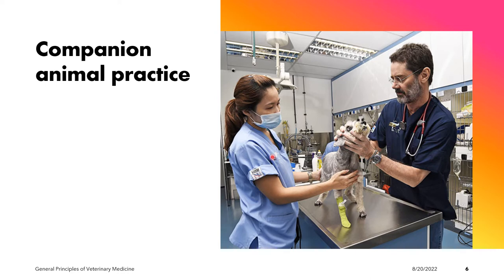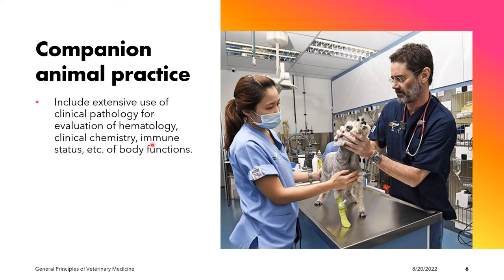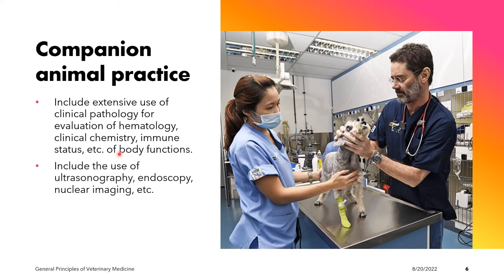Companion animal practice includes extensive use of clinical pathology, or evaluation of the hematology, clinical chemistry, immune status, and other bodily functions of the animal. We also have the use of ultrasonography, endoscopy, as well as nuclear imaging.